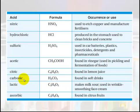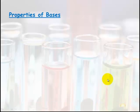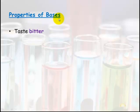Some other familiar acids: lactic acid is found in milk and is also produced in your muscles; ascorbic acid is vitamin C; carbonic acid is found in soft drinks; and citric acid is found in lemon juice.